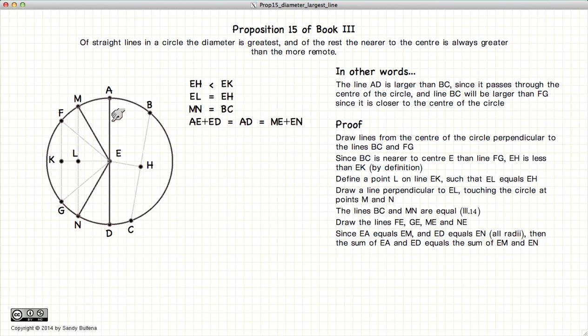Looking at this, we have EA and EM are radii of the same circle, so they're equal. Likewise, DE and EN are also equal since they're radii of the same circle. So if we add them together, we have AE plus ED, or in other words AD, is equal in length to ME plus EN.